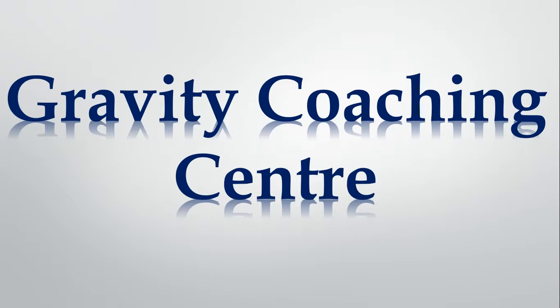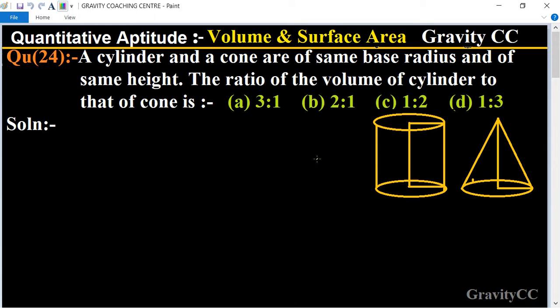Welcome to our channel Gravity Coaching Center. Quantitative Aptitude, chapter Volume and Surface Area, question number 24. A cylinder and a cone are of same base radius and of same height, so the ratio of the volume of cylinder to that of cone is: